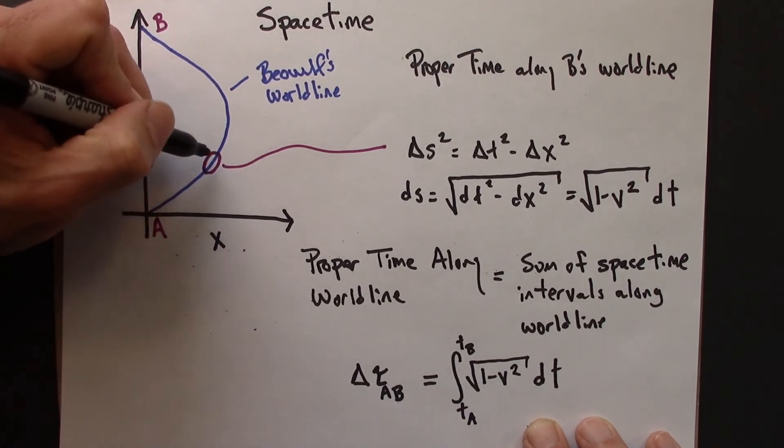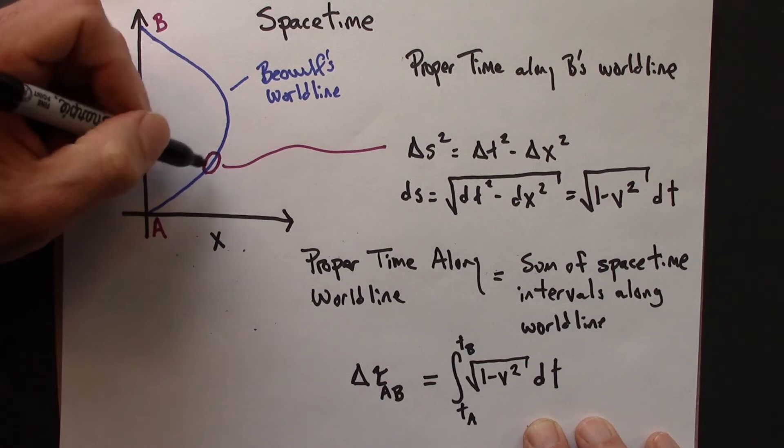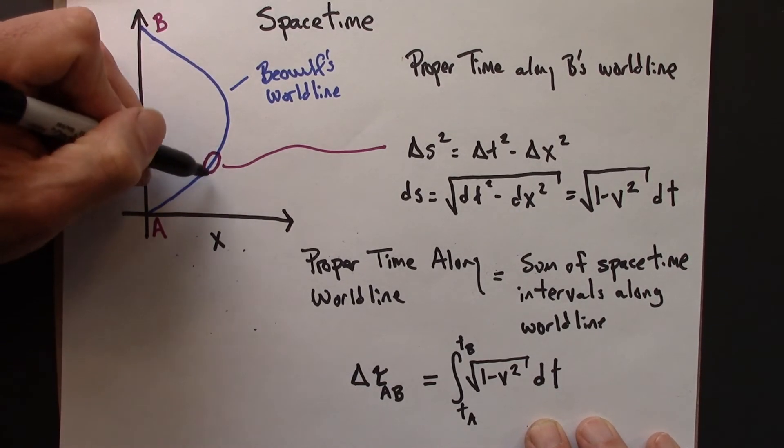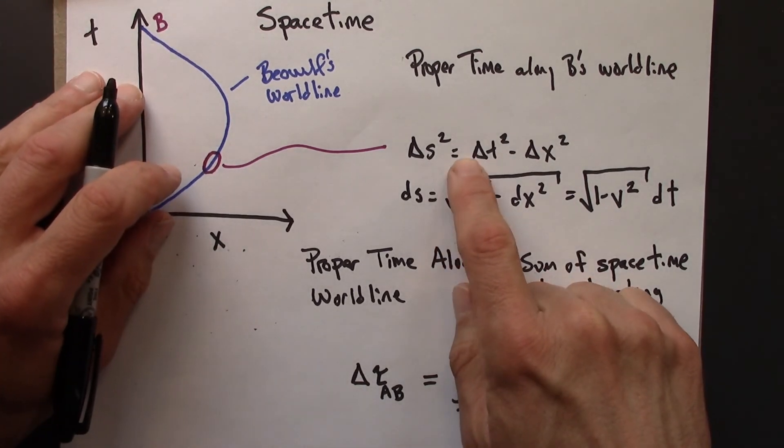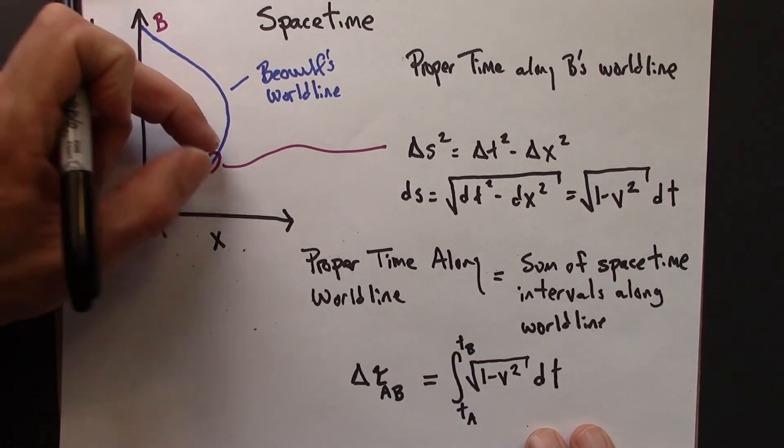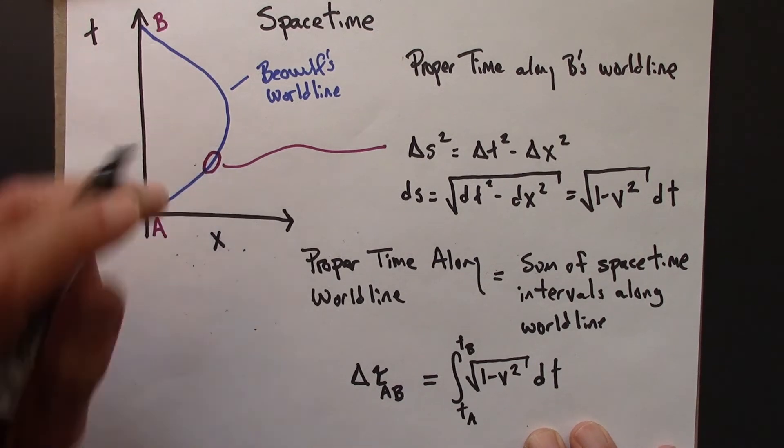In this little time segment here, Beowulf's clock is inertial, constant velocity. Therefore, I can use the metric equation and say that Beowulf's time, for that little moment, is actually a spacetime interval.